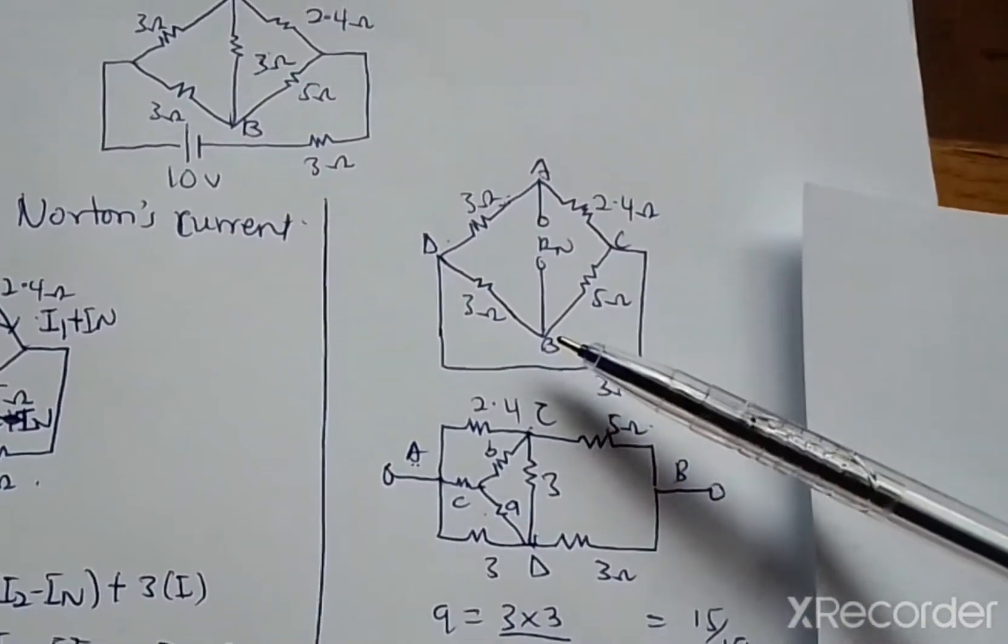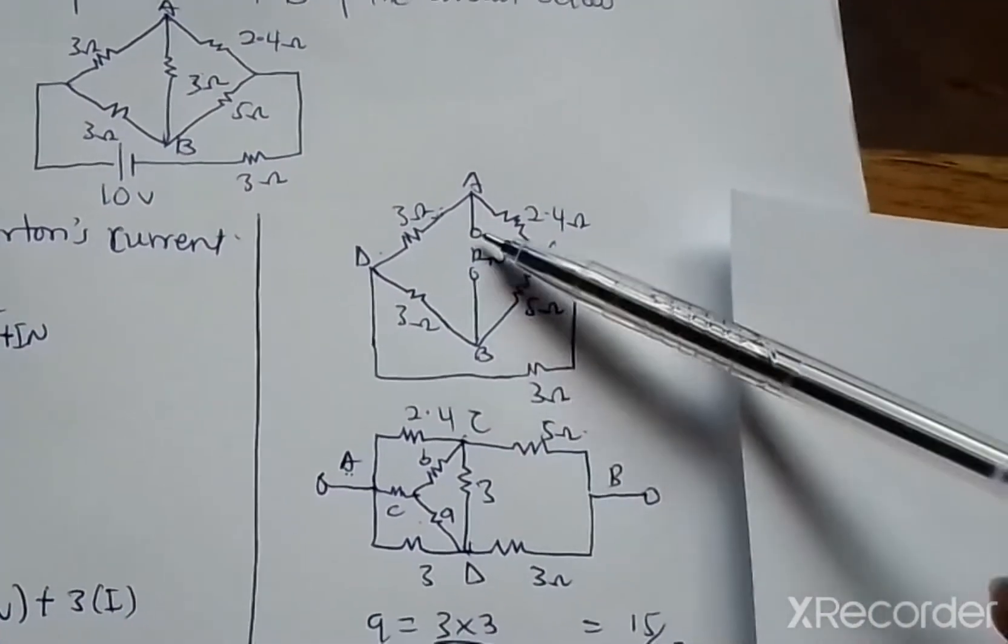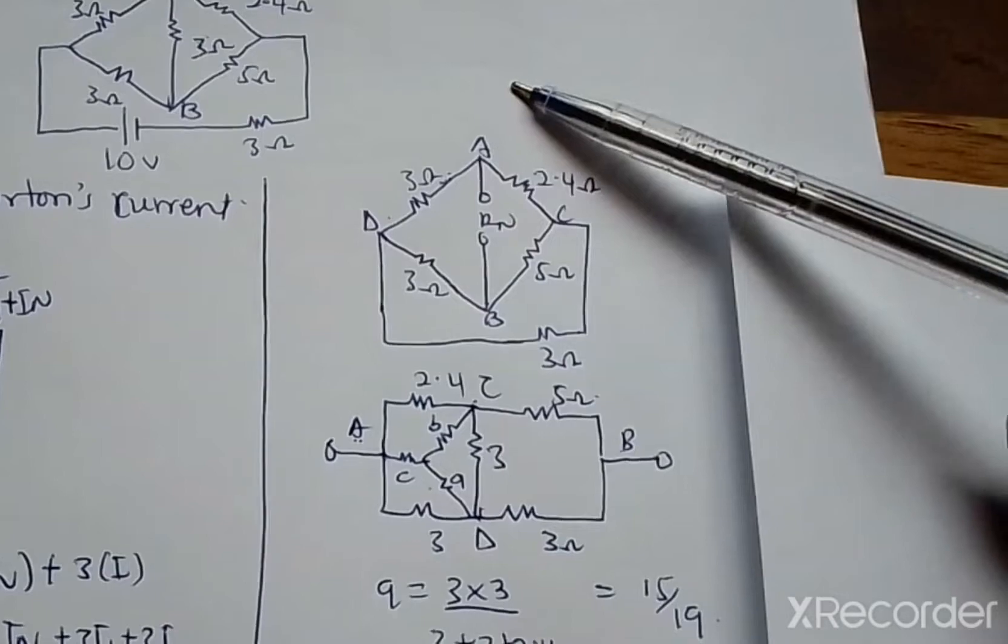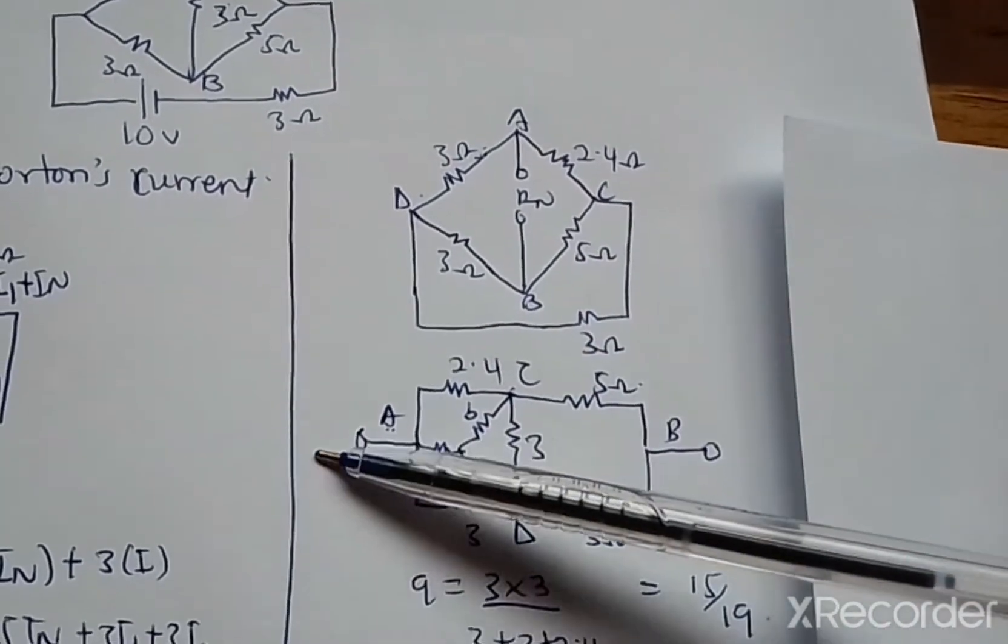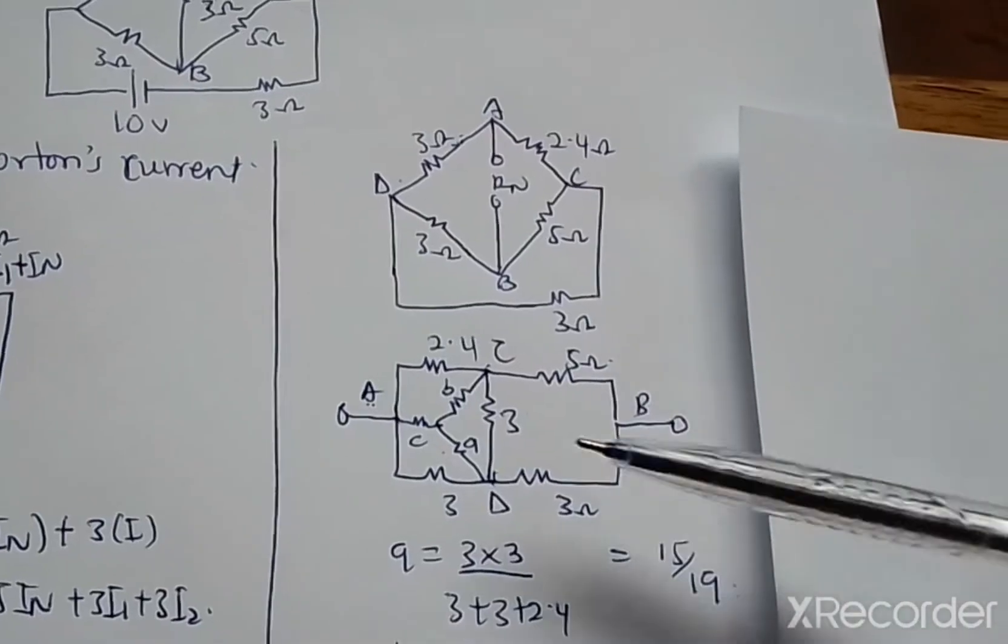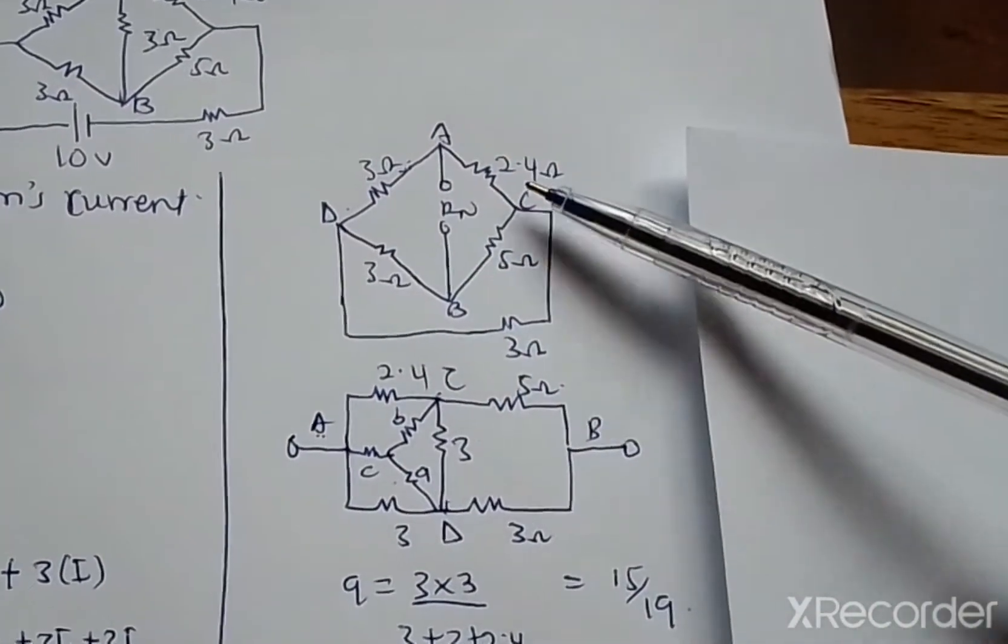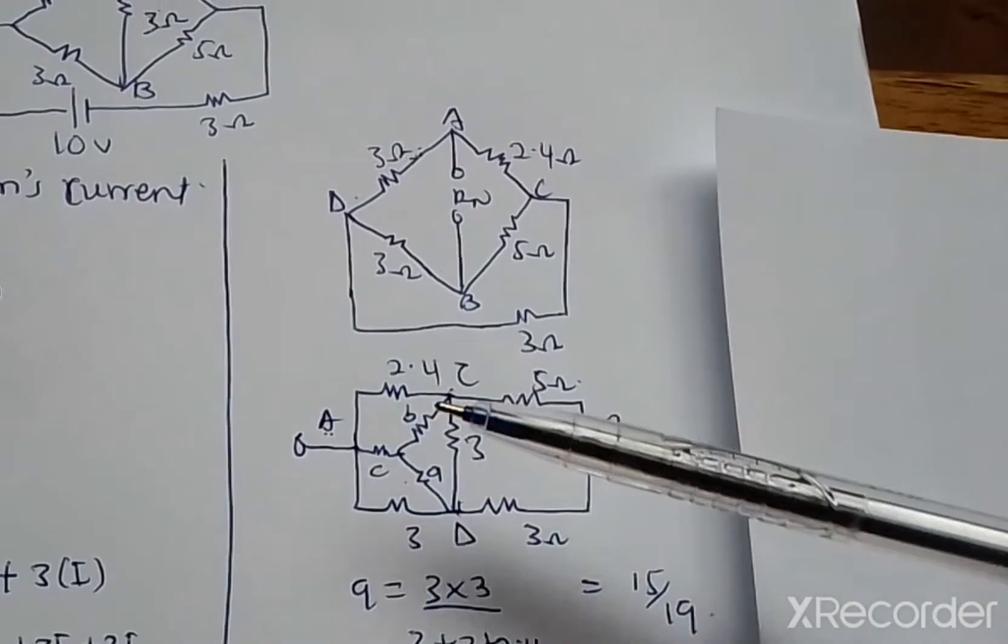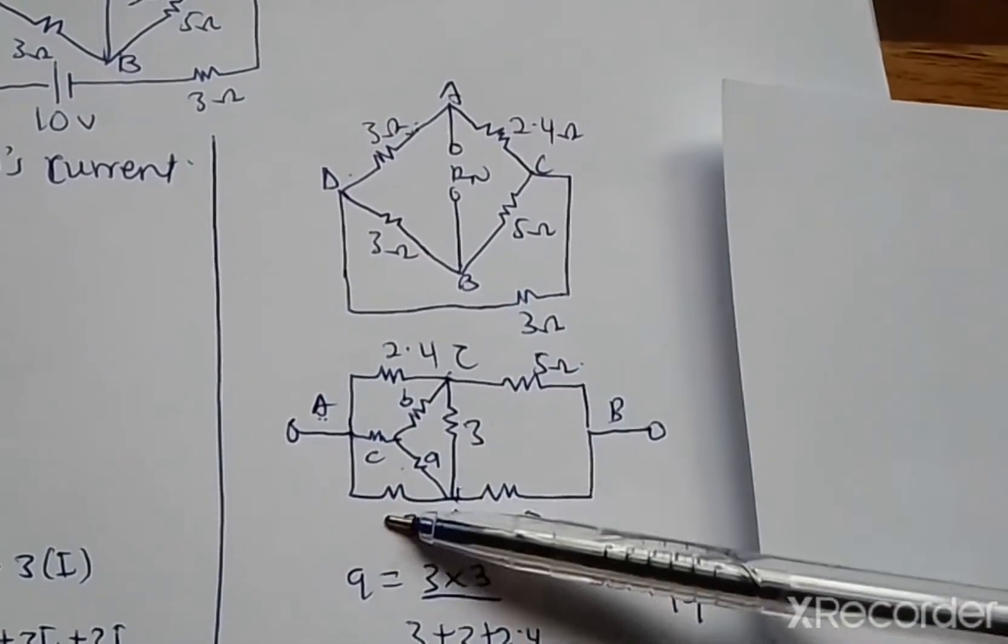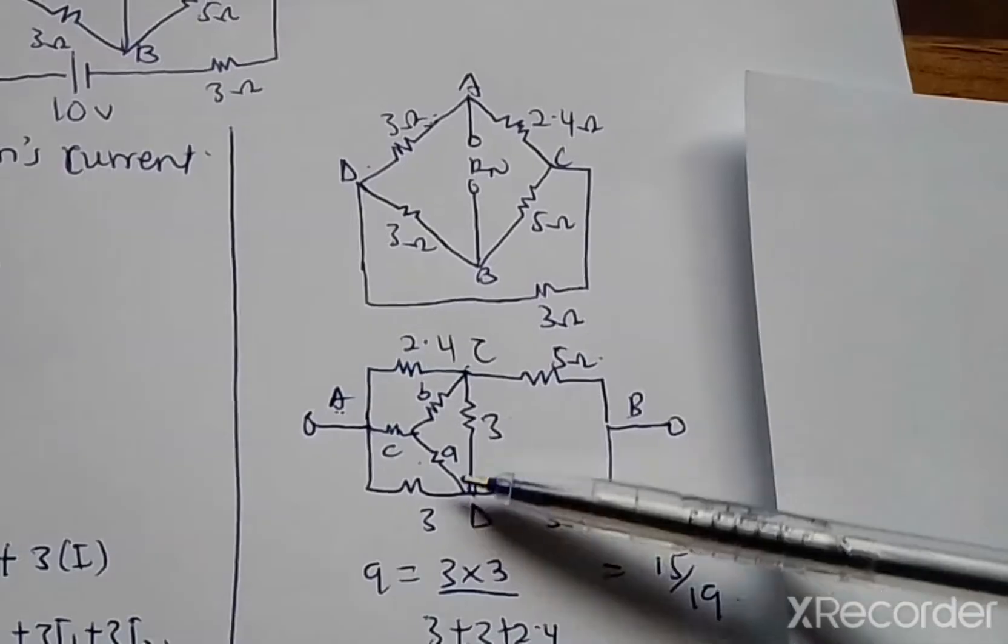Here you will short circuit the power supply, which is this voltage source here. Then from here you have to find the total resistance across these two terminals. You open the terminals up and move this one this way. When you move it this way you get something like A and B like this.